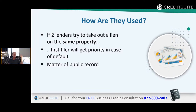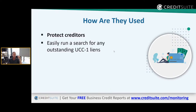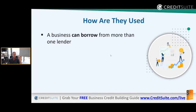These are used to protect creditors because you can easily run a search for outstanding UCC-1 liens. You can see them on business credit reports — all three bureaus, D&B, Equifax, and Experian, have UCC sections on their commercial credit reports. Many states also offer online searches, sometimes for free. A business can borrow from more than one lender and even use the same collateral for multiple debts, but lenders will do a UCC search to see if that collateral has already been used.